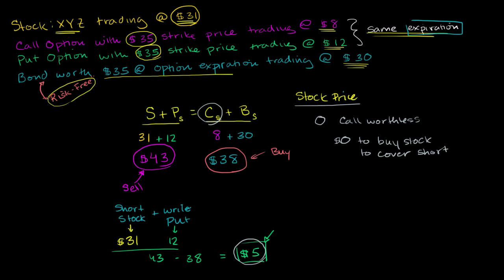The bad thing is that put option that we wrote. Remember, we wrote it. We sold the put option. We're giving someone else the right to sell the stock to us for $35. And if the stock price is worth zero, they're going to exercise that option. Because they can then buy the stock for zero and they can sell it to us for $35. So we have to spend $35 to buy the stock from the put holder.